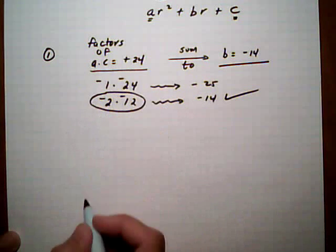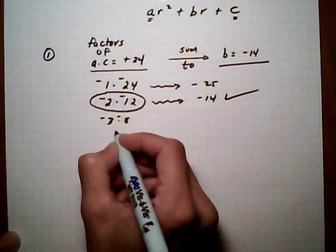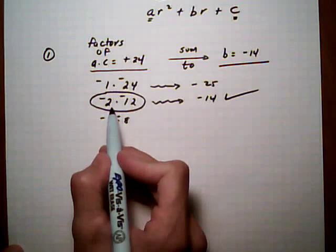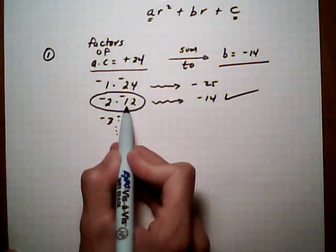Now if that wasn't the right one we would keep going. We'd say 3 times 8, minuses, and just keep going until you run out of possibilities. But as soon as you find the right one that gives you the sum you want, you stop there and take the two factors that worked.